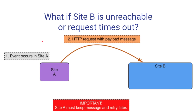Let's look at what happens if site B is unreachable or the request times out. When we make the request to site B and cannot reach it — due to a network outage or the web server not being available — then we cannot deliver our message to site B. In that case, it's important that site A keeps the message and retries later, because if site A drops that message, site B will never get it again.